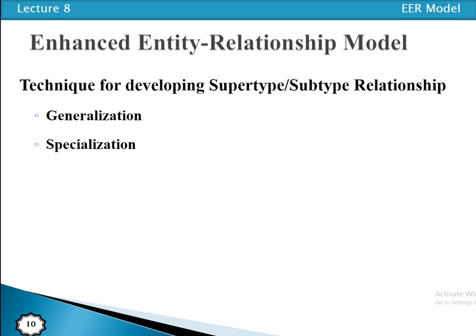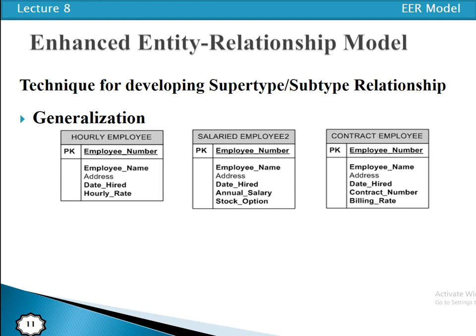To develop a super type/sub type relationship, we have two techniques: generalization and specialization. Generalization is the process of defining a more general entity type from a set of more specialized entity types. When different specialized entity types are available, we define a general entity type from them — this concept is called generalization. Generalization is a bottom-up approach.